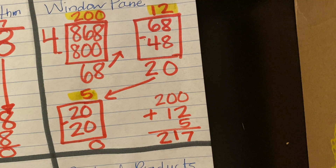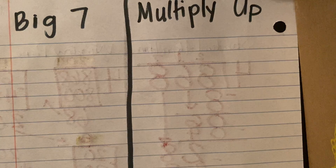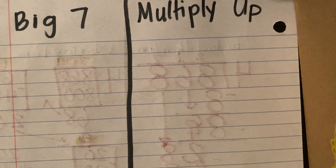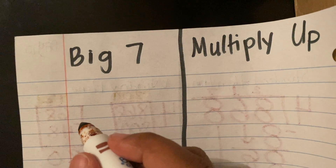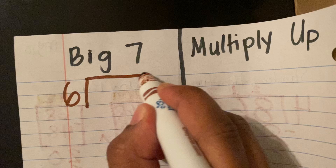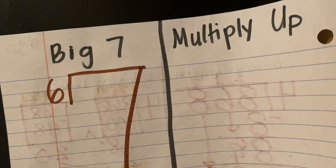Moving on to our next question. Monique needs exactly six plates on each table for a banquet. If she has 312 plates, how many tables will she need to prepare? We are going to be using our big seven. We're going to write our divisor, which is six, and our dividend — we'll come over here and make our big seven: 312.